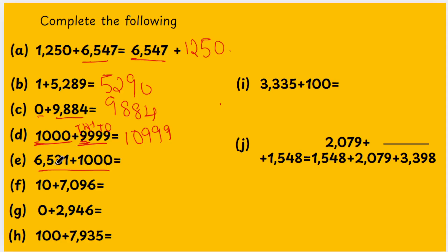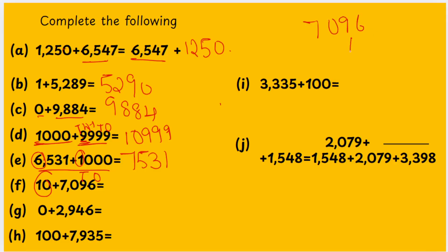The next sum is 6,531 plus 1,000. Which number do you add for the 1,000s place? 6 plus 1 is 7. The remaining numbers stay as they are: 5, 3, 1. Next sum: 7,096 plus 10. Which place do you add? The 10s place. 6 plus 0 is 6, 9 plus 1 is 10, 1 plus 0 is 1, then 7. So the answer is 7,106.